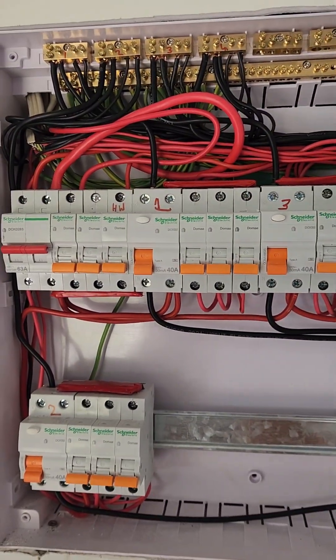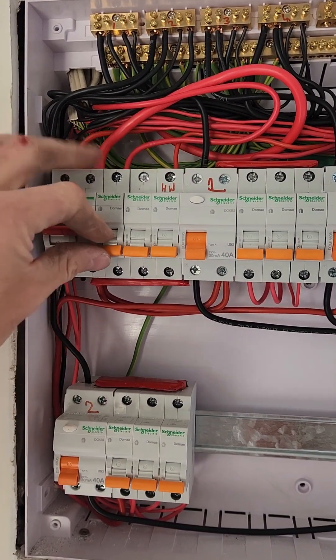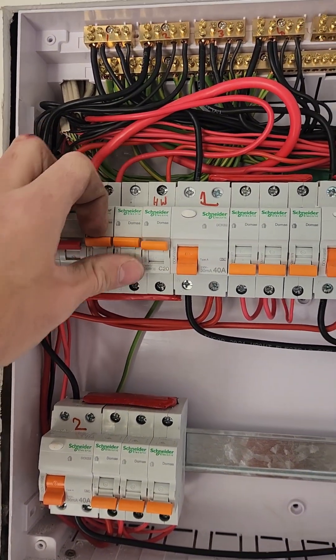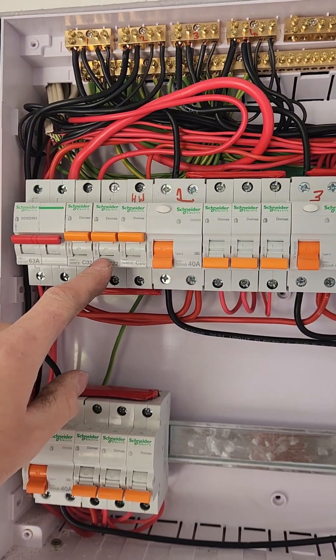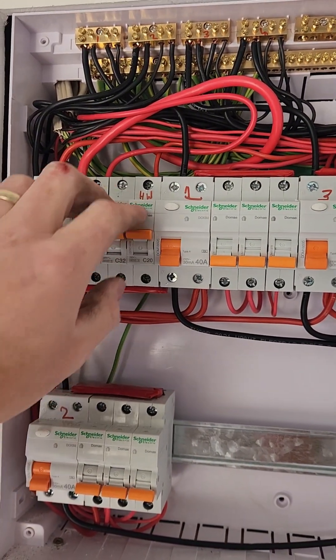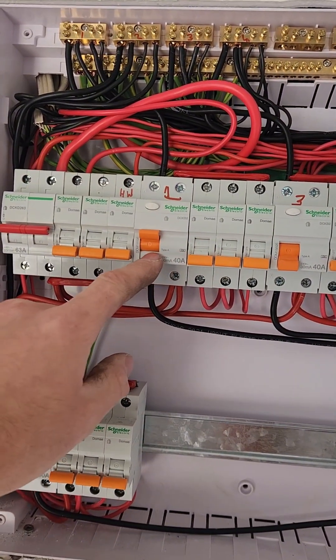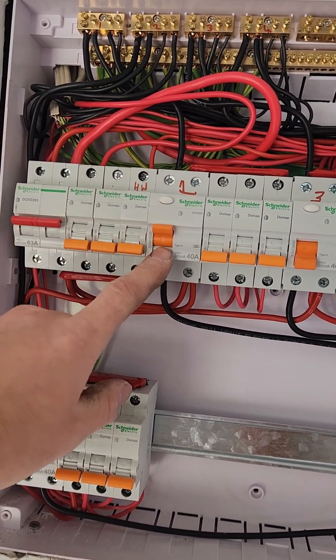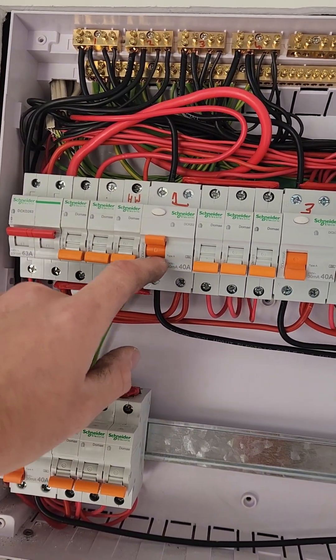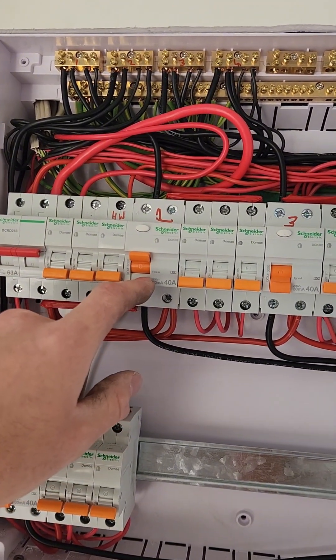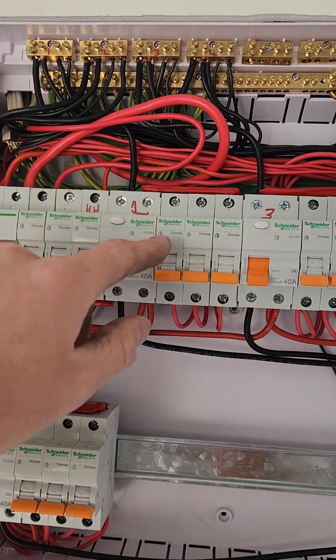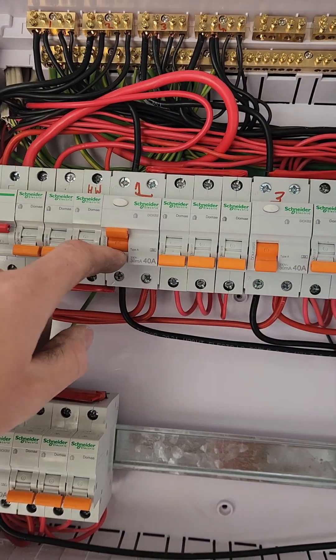Now for those of you who don't know, this is an MCB or a miniature circuit breaker and those are designed to protect the circuit from over current. This is an RCD. An RCD is designed to protect people, so it detects if there is a leakage to earth via an imbalance in the current leaving from the RCD and the current coming back through the RCD.